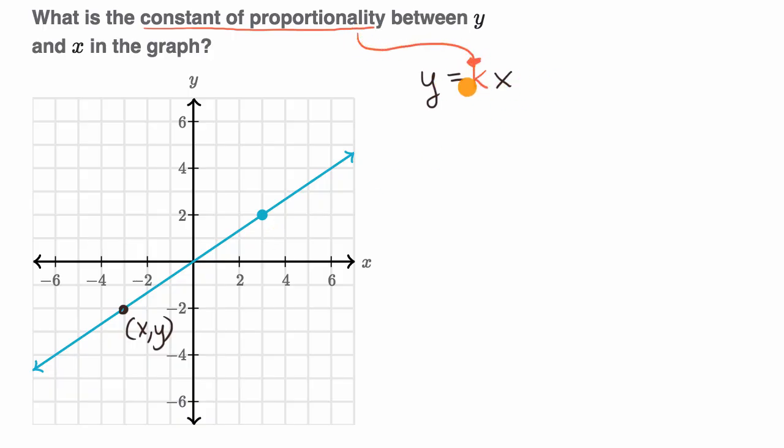Sometimes you will see this expressed if you divide both sides by x. Sometimes you will see this as y over x is equal to the constant of proportionality. It shows, for any x-y pair, if you take your y divided by x, what do you get? That's the same thing.